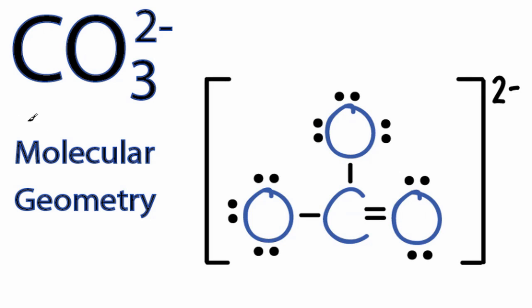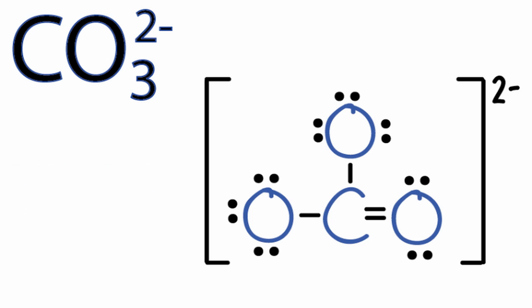Let's look at the molecular geometry for CO3 2 minus. We can see there are three atoms, three oxygen atoms, bonded to that central carbon.